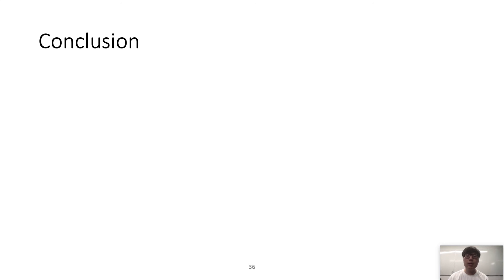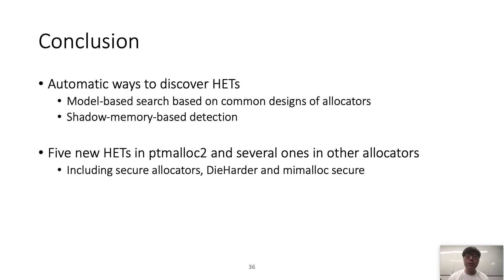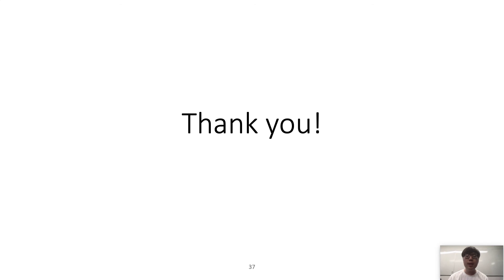In conclusion, we discussed automatic ways to discover heap exploitation techniques using model-based search and shadow memory-based detection. Rkip discovered five new techniques in ptmalloc2 and several in other allocators including DieHarder and MIMallocSecure. Our tool is released as open source, so please try Rkip if you want to find new heap exploitation techniques in your allocators. Thank you — if you have any questions, I'm happy to answer them.